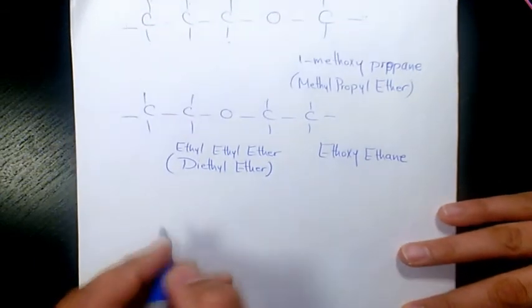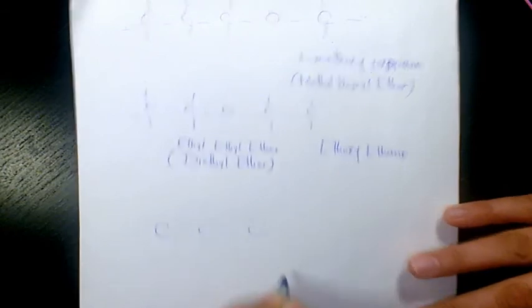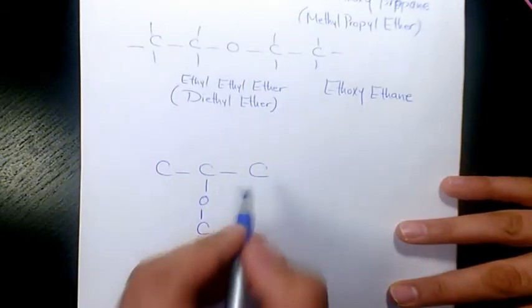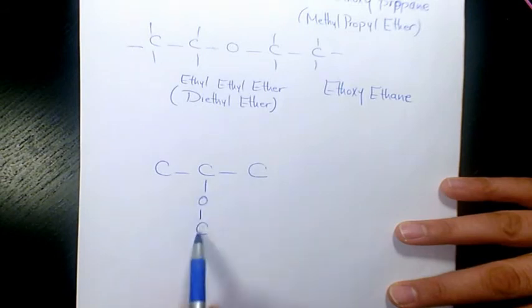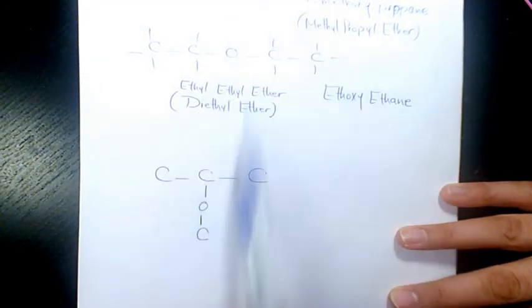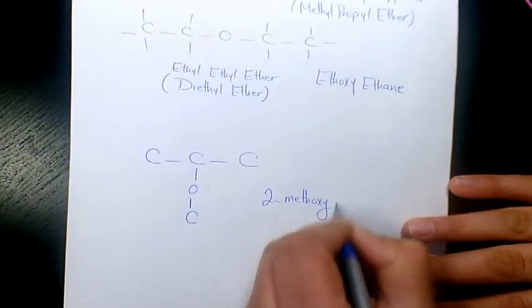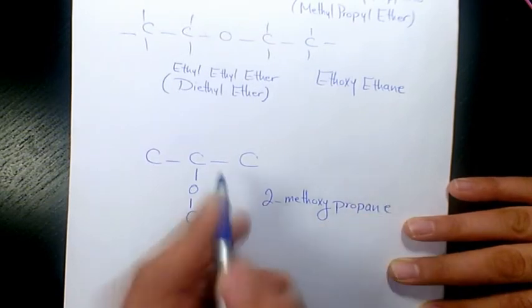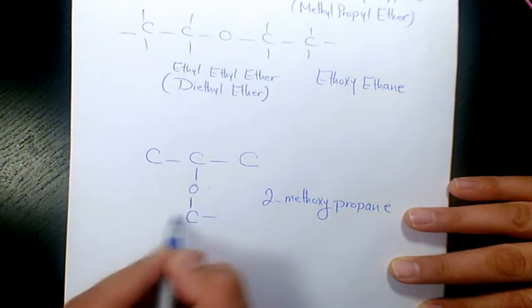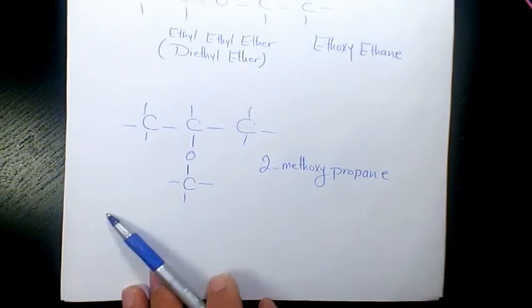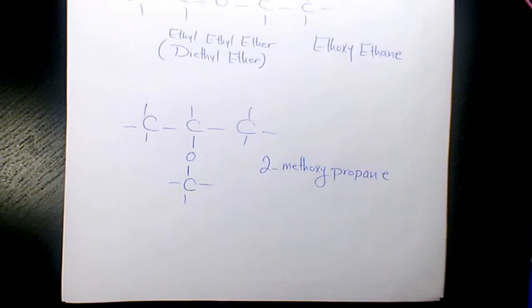And the last one is going to be when we have three carbons like that and we have oxygen, and that's connected like that. So that's propane and we have 2-methoxy. You remember the first one was 1-methoxy connected to the first one. Here this one connects to the first one, and here it's going to be methoxy connected to the second one. So we call it 2-methoxypropane because that's the second carbon and methoxy group connects to the second carbon. These are the number of hydrogen atoms: 1, 2, 3, 4, 5, 6, 7, 8, 9, 10. So these are all seven isomers of C4H10O. Thank you for watching and have a great day.